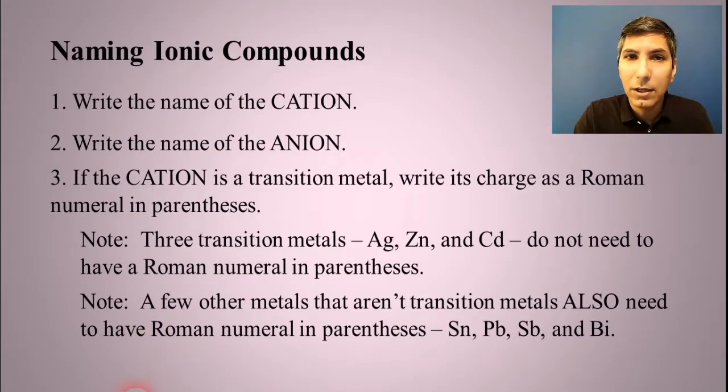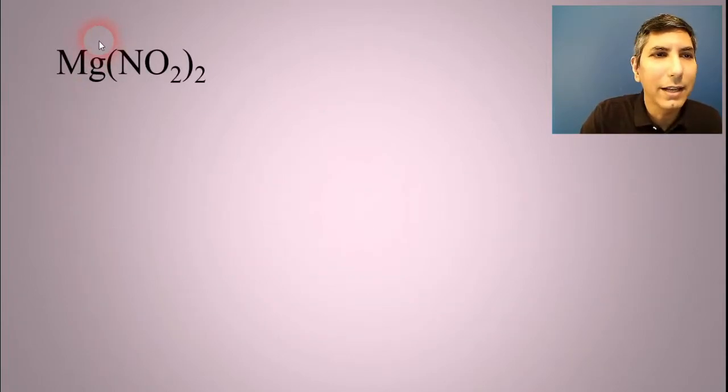And like I said in the last video, to get good at this, you have to do lots of them. So we're going to do lots of examples to get good at naming ionic compounds. So here's the first one. Once again, we just have to isolate the cation. That's the first one.